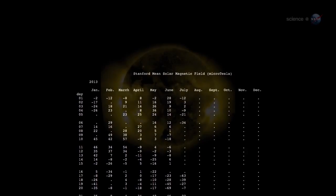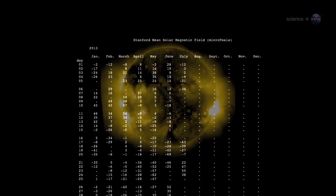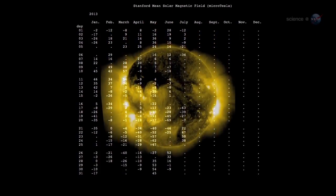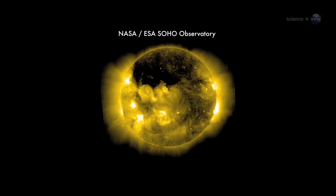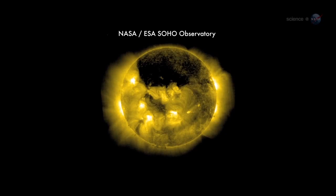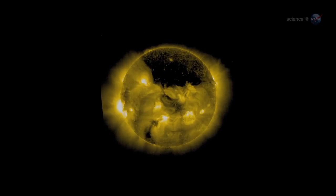As the field reversal approaches, data from Wilcox show that the Sun's two hemispheres are oddly out of sync. The Sun's North Pole has already changed sign, while the South Pole is racing to catch up, says Shearer.